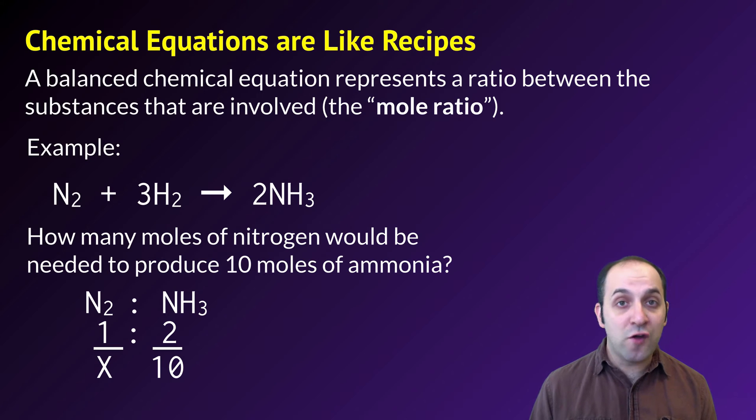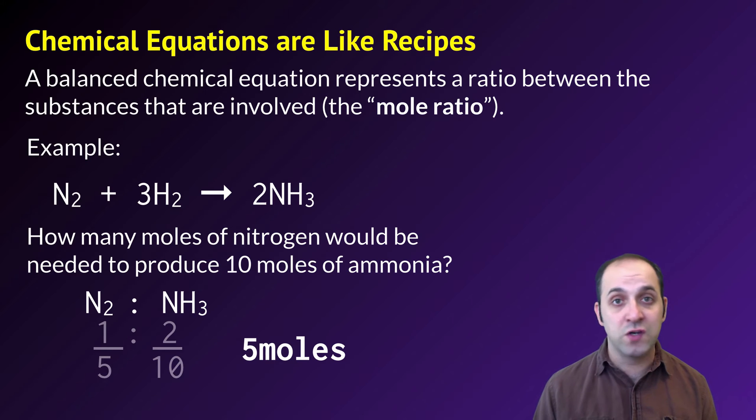Now I can just cross multiply and divide in order to determine that I'll need five moles of nitrogen gas in order to produce 10 moles of ammonia, which makes perfect sense since they're in a one to two ratio nitrogen to ammonia. That's basically all that this is in terms of mole ratios.